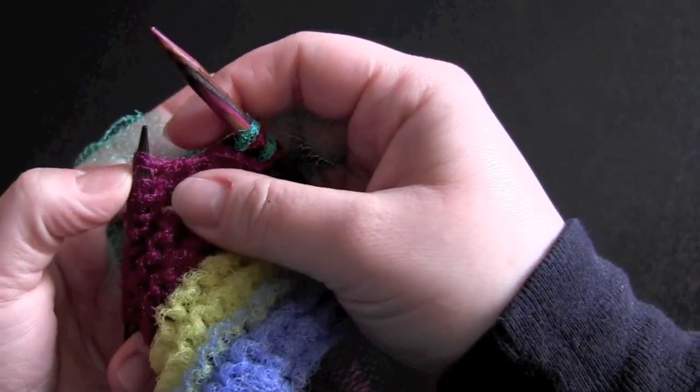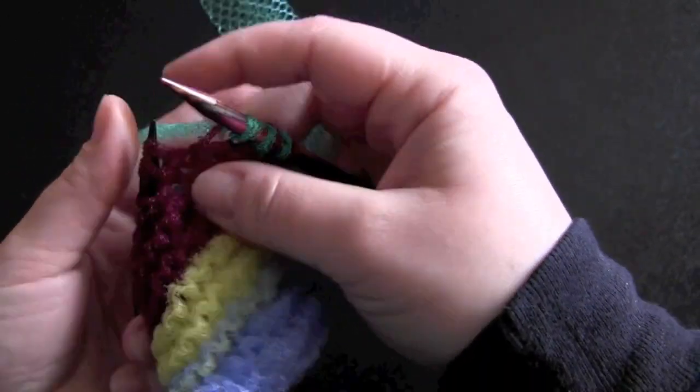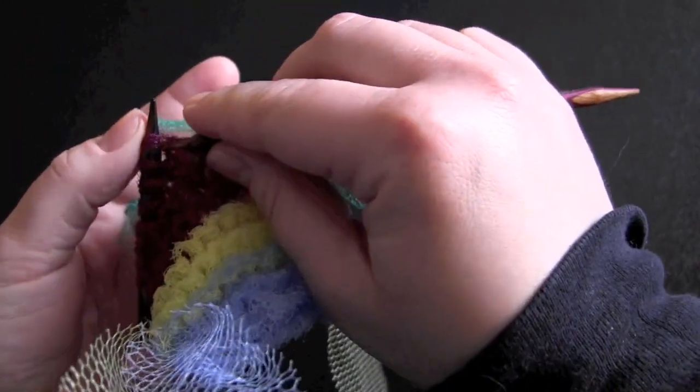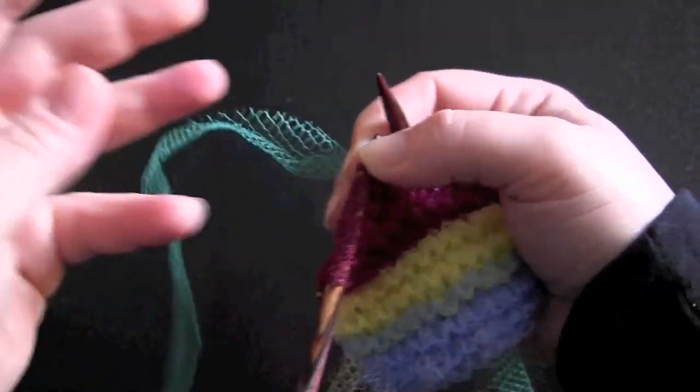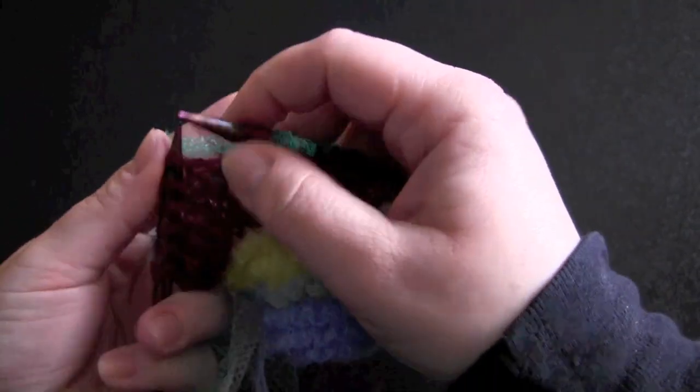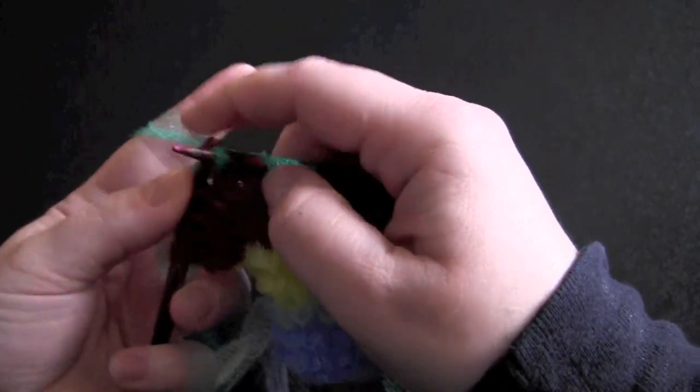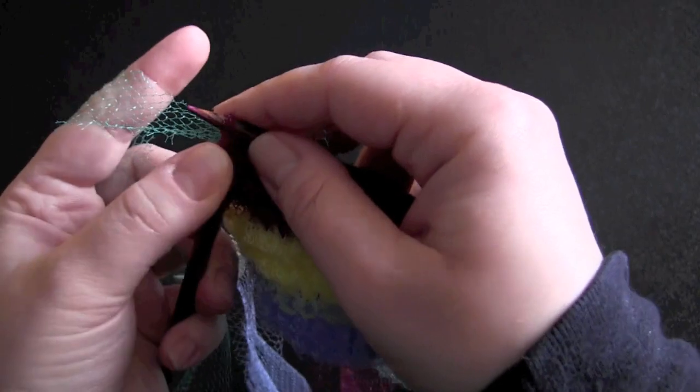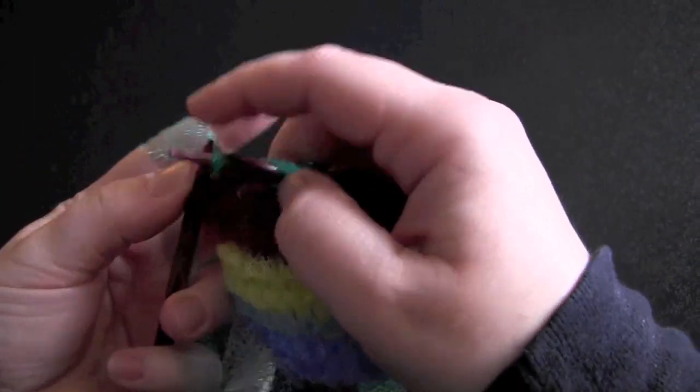So another option that you have with knitting these scrubbies, you can take some cotton yarn like the Lily Sugar and Cream or the Peaches and Cream cotton, and you can hold a strand of that together with your tulle or your nylon mesh as you're knitting. That will make the scrubby a little bit bulkier and it absorbs dish soap a little bit better than the plain mesh, but you don't have to do that. It's even more fiddly than just working with the mesh alone. Sometimes I do it that way.